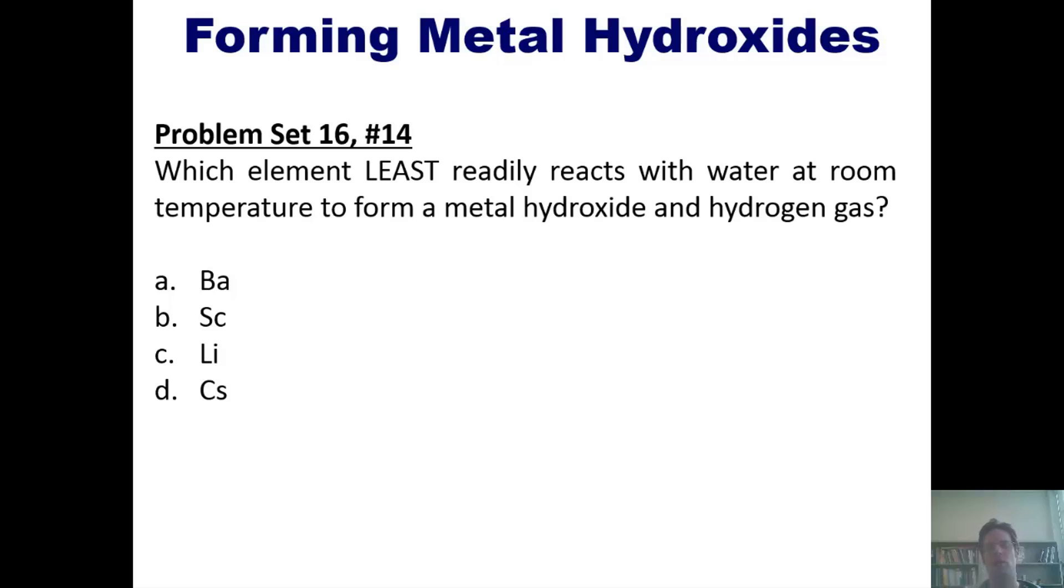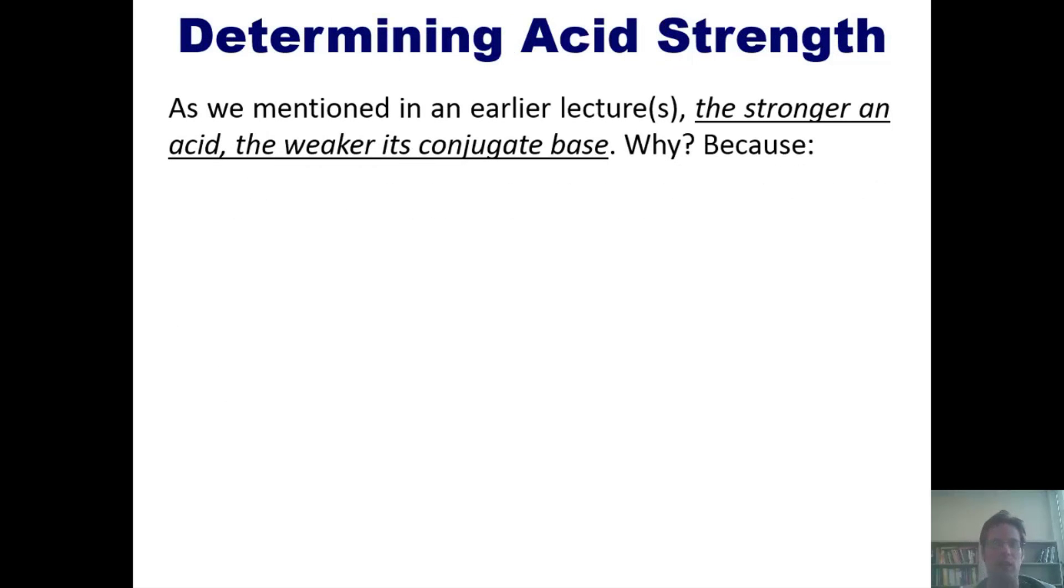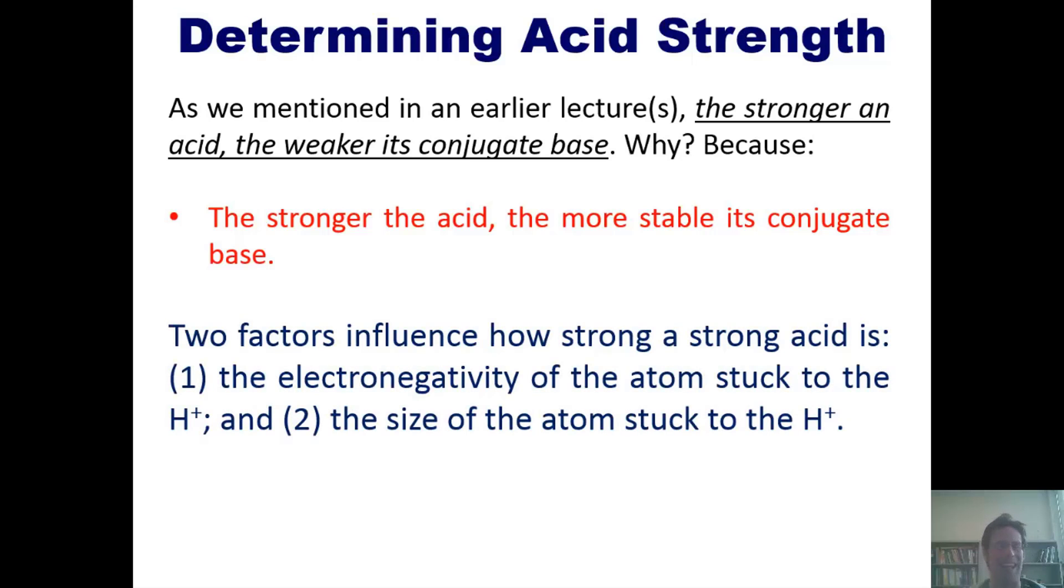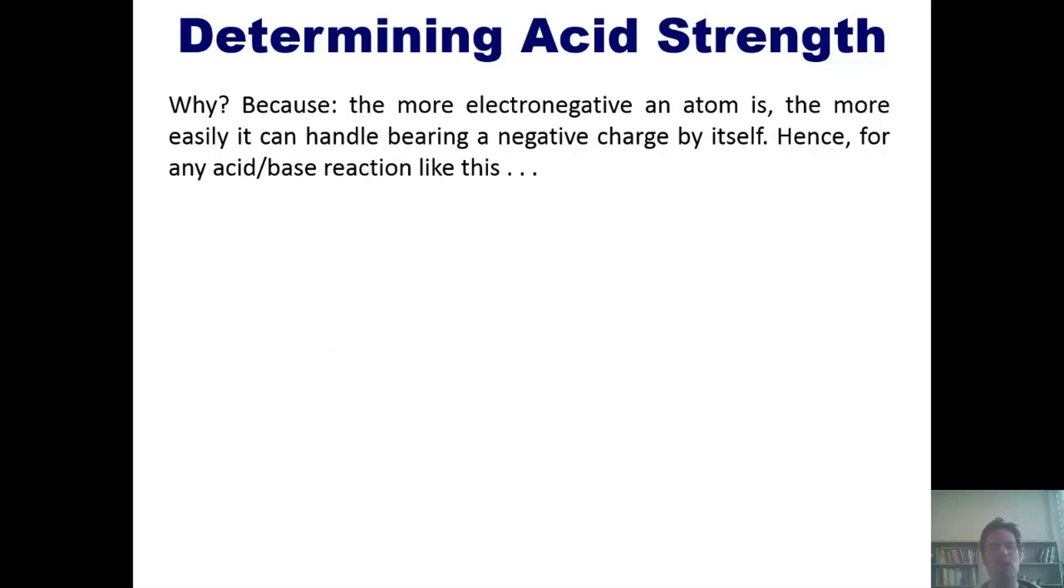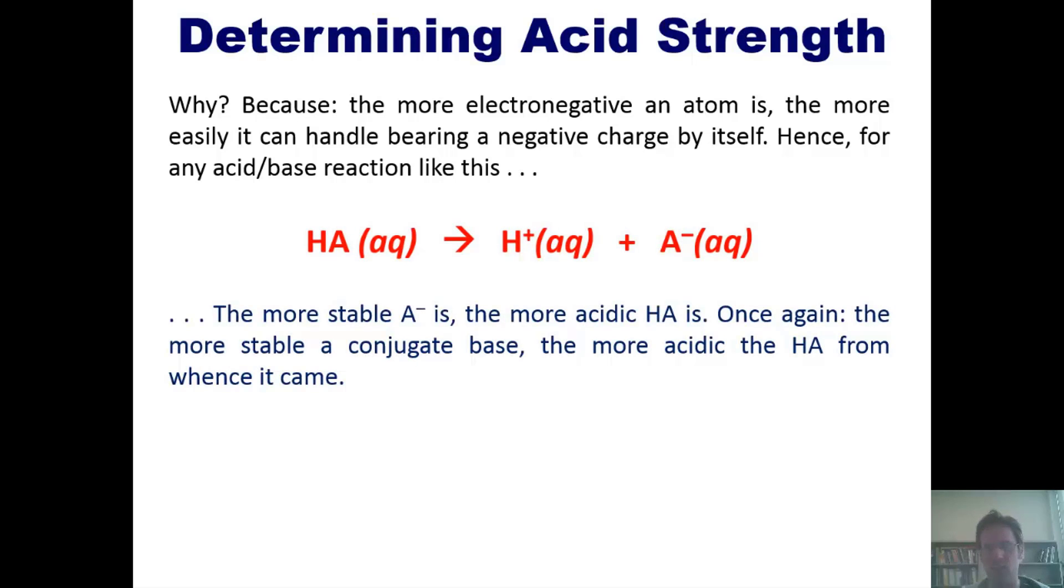Now to another subject: determining acid strength. As I mentioned in an earlier lecture, the stronger an acid, the weaker its conjugate base. The reason is because the stronger the acid, the more stable its conjugate base. Two factors influence how strong an acid is: first, the electronegativity of the atom stuck to the H+, and second, the size of the atom stuck to the H+. The more electronegative an atom is, the more easily it can handle bearing a negative charge by itself. Hence, the more stable A- is, the more acidic HA is.